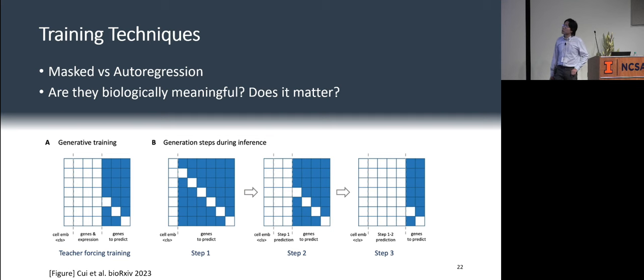There are also different training techniques in this procedure. The easiest one is probably the mask expression. So just mask out some genes and try to predict them using this model. There are also auto regression.